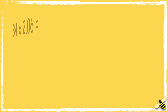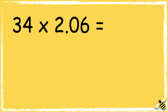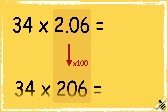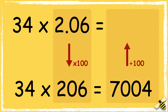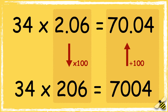Let me explain what we did with the decimal point. We started with 34 multiplied by 2.06. We multiplied 2.06 by 100, so then we had 34 multiplied by 206 which was 7004. As we had previously multiplied by 100, we need to do the inverse to the answer. The inverse of multiply is divide, so we divided 7004 by 100 to get the answer 70.04.